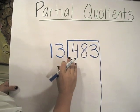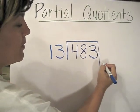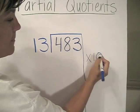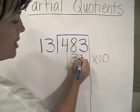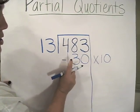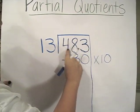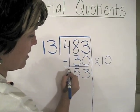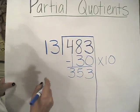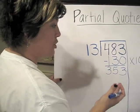The first time, I'm saying, well, what if I say times 10? 13 times 10 is 130. I was able to use 130 of the 483. When I subtract, I get 353 remaining that I haven't used yet.